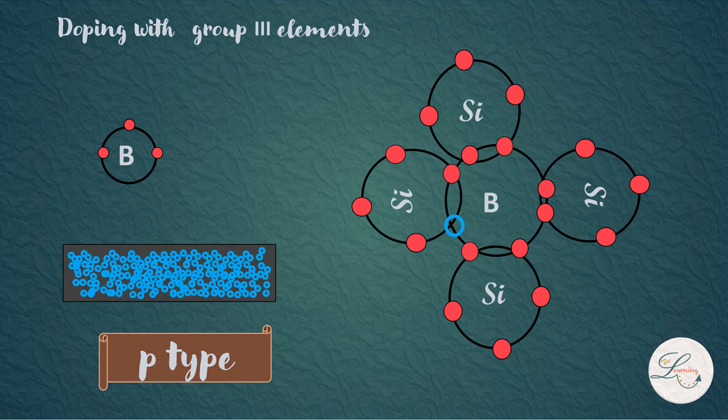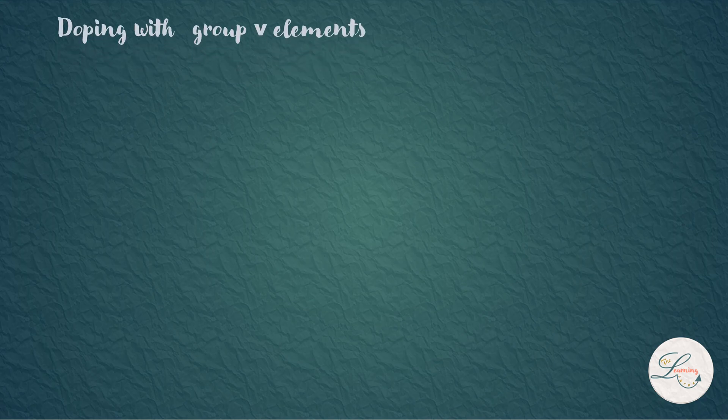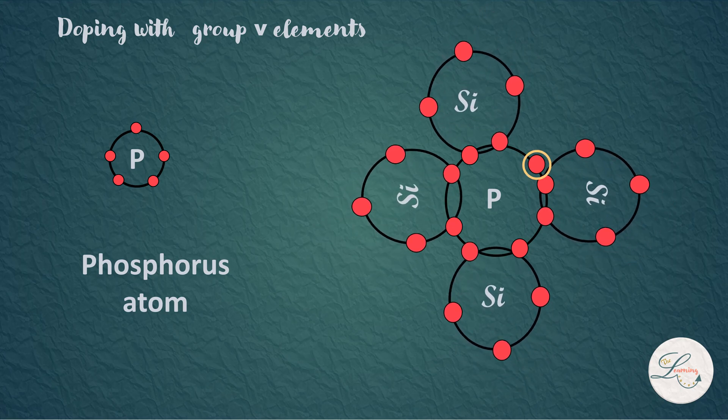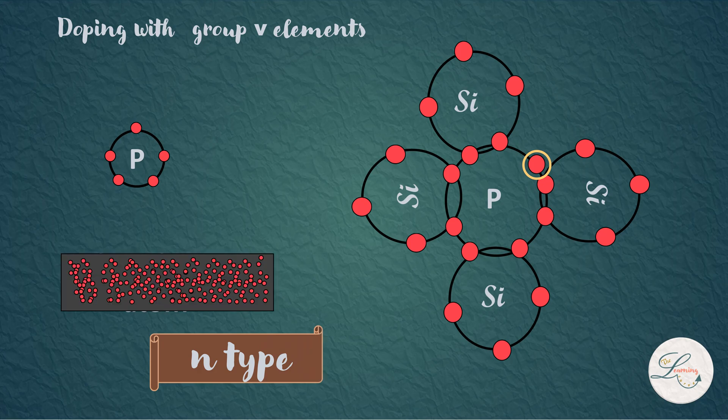Similarly, when a pure silicon is doped with phosphorus which has five valence electrons, there will be an extra electron which is free to move. This is called n-type doping. That is, in n-type, there are excess electrons.